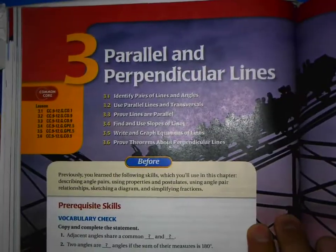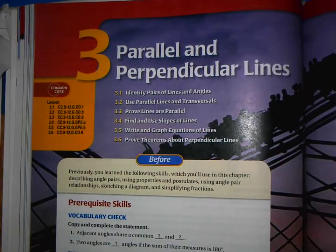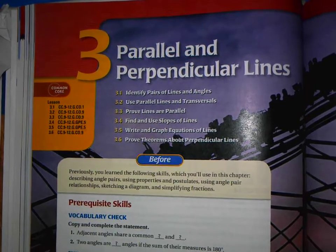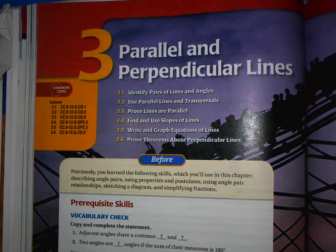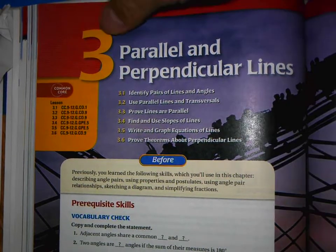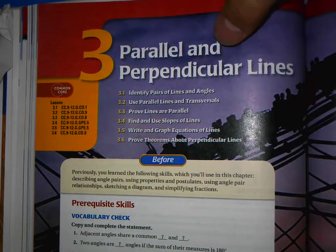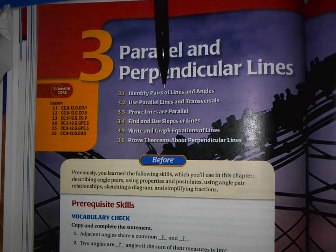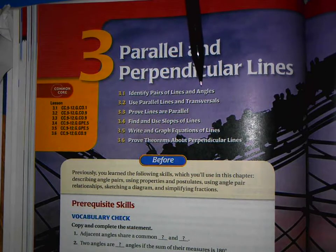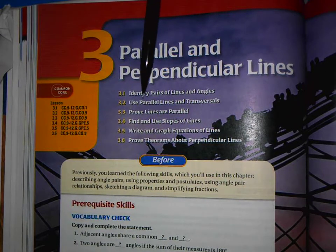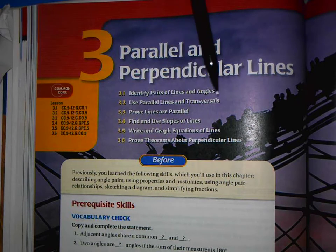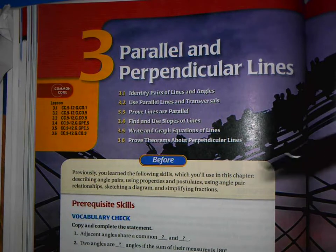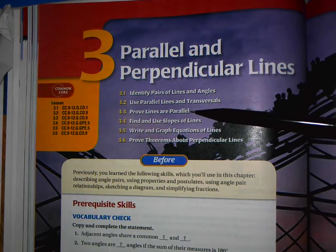I want to continue to train you on how to use this textbook and make it useful to you. It's a tool to help you understand geometry. So here we are in Chapter 3, Parallel and Perpendicular Lines. We've already been through Section 1, Identify Pairs of Lines and Angles, and Section 2, Use Parallel Lines and Transversals. Now we're looking at Prove Lines Are Parallel.